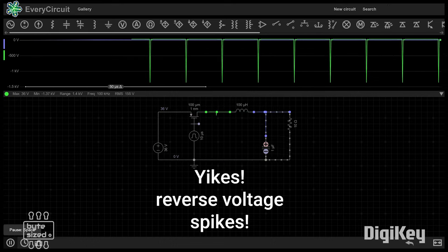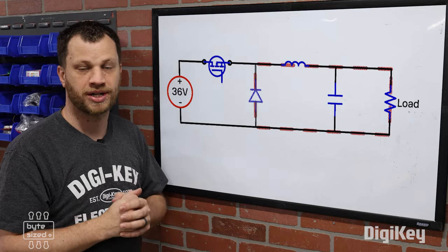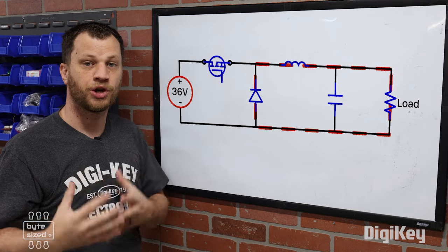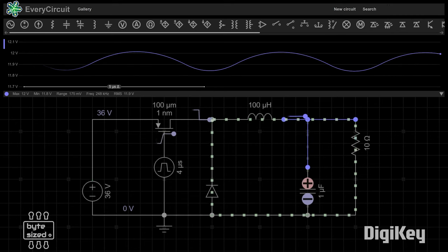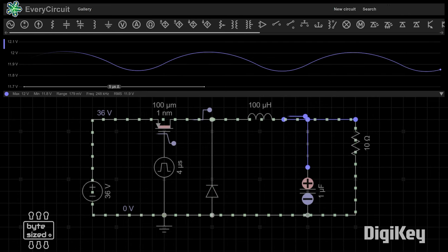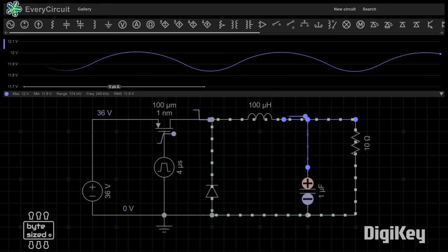Fortunately, the solution is pretty simple. I can just add a diode into the circuit here, which provides a path for the current to flow when the MOSFET is open. You can adjust the amount of time the MOSFET is closed versus open, this is also called the duty cycle, in order to adjust the output voltage.